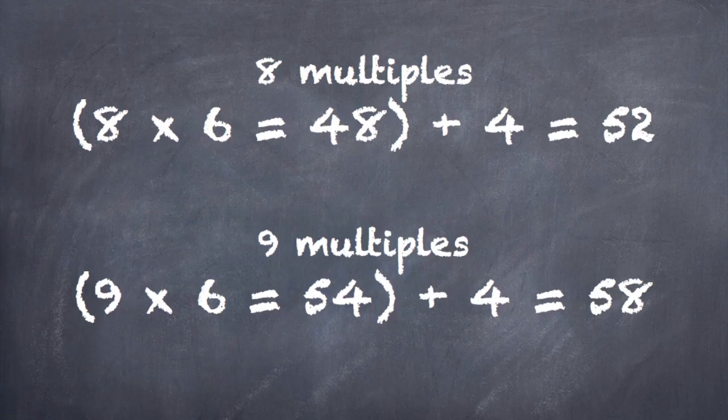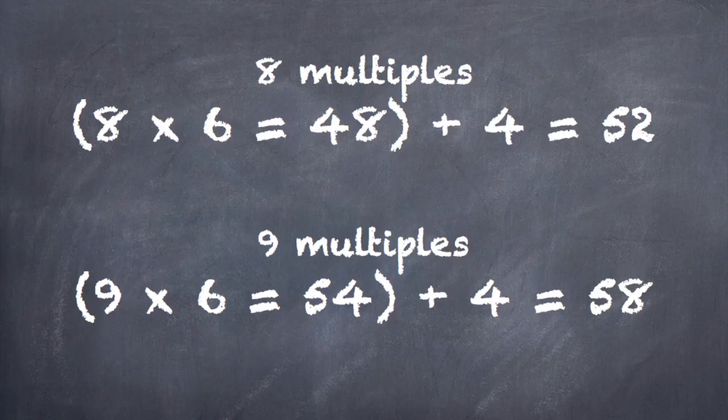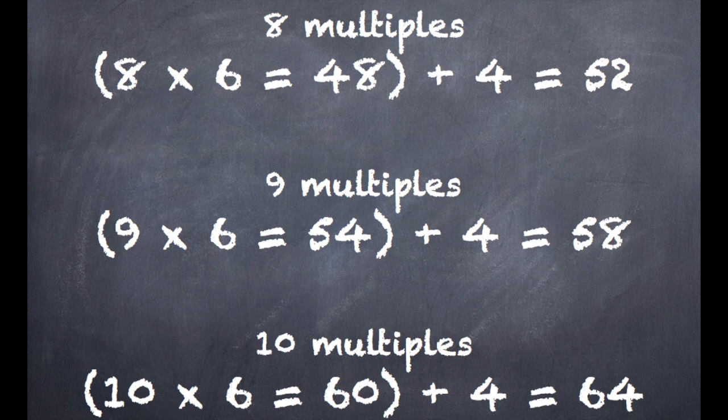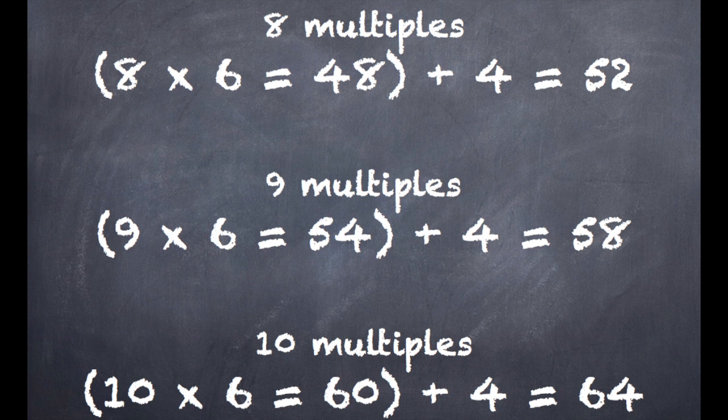Now, again, this was eight multiples. But if we wanted to do nine multiples, then we would have 54 stitches plus four, which would equal 58 stitches. Or if we wanted to have 10 multiples, we would end up with 60 stitches plus four, which would equal 64 cast on stitches.